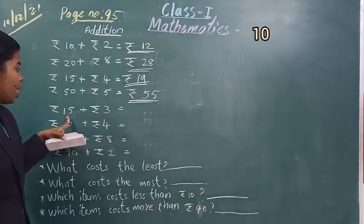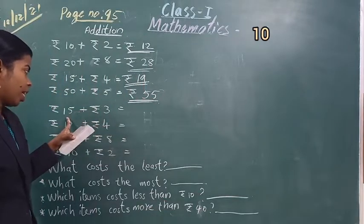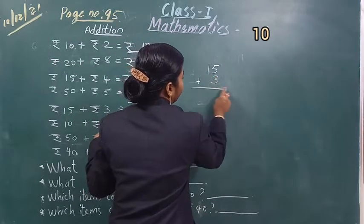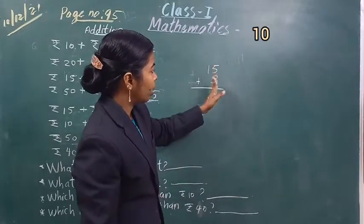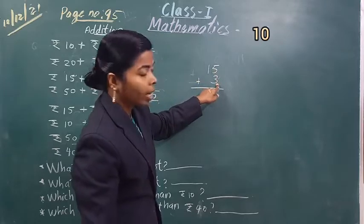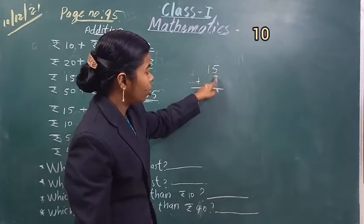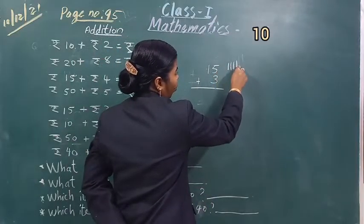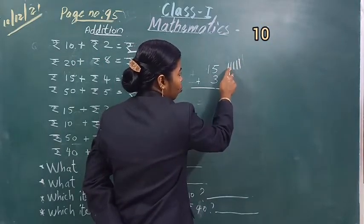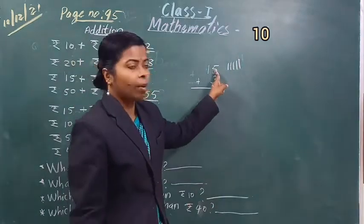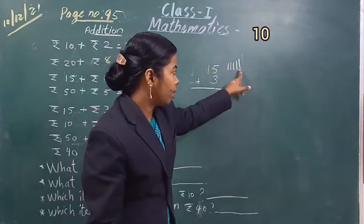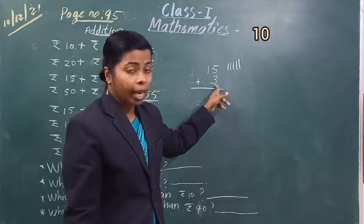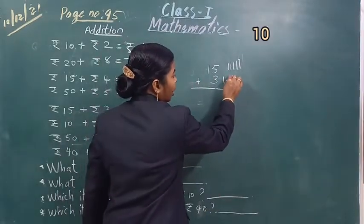The next one: रुपीज 15 plus रुपीज 3. लिखने के time याद रखना — 5 के नीचे ही 3 लिखना. 5 plus 3 करना है. इदर 5 है, इसलिए 5 strokes बनाया. और 5 के साथ 3 number add करना है, इसलिए 3 strokes बनाया. अब ये strokes पूरे count करना है.